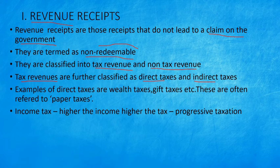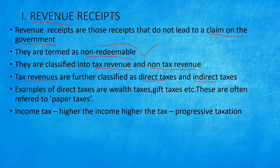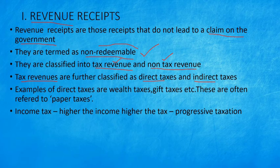Shall we revise once from the beginning? So, total receipts that come to the government — how do we classify them? Mainly we have two classifications: revenue receipts and capital receipts. Revenue receipts are those which do not have any claim on the government — no claim, no liability. We call them non-redeemable. Further, they are classified into tax revenue and non-tax revenue. Tax revenue is further classified as direct taxes and indirect taxes.